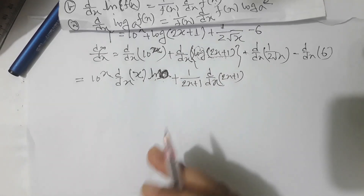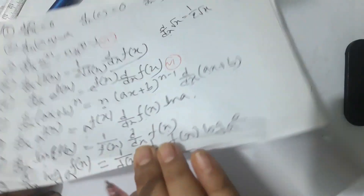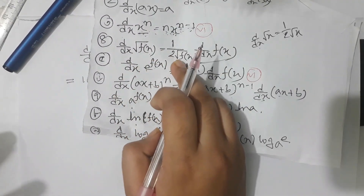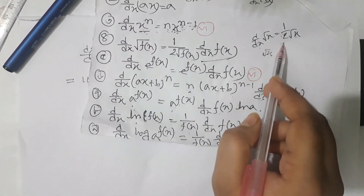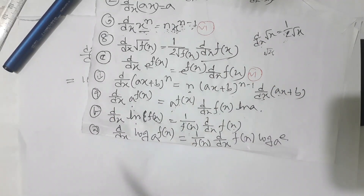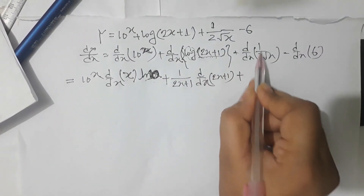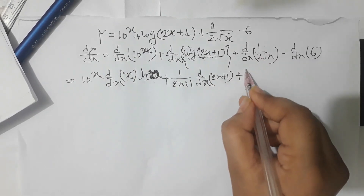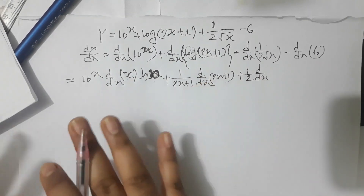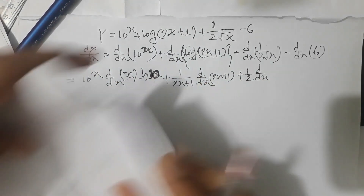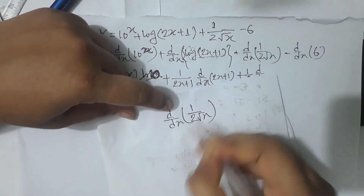2x plus 1 is f of x, plus ddx of 1 by 2 root x, which is equal to 1 by 2 root x. We know that the root is equal to ddx of root f of x, which equals 1 by 2 root x. We have root x. If we have 2 root x, we will need to work with it. We want to see that the root equals 1 by 2 root x. We will write 1 by 2 root x.